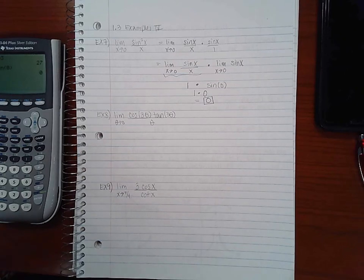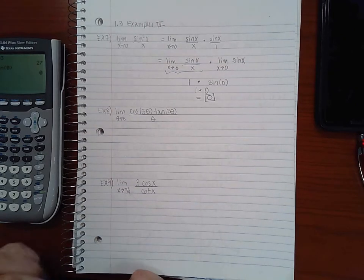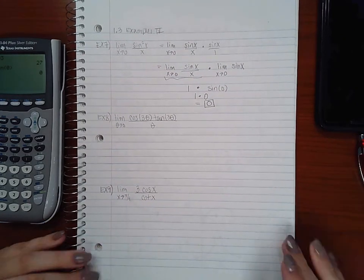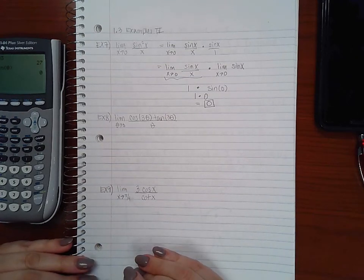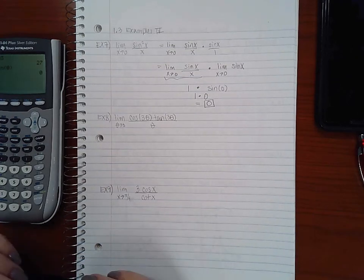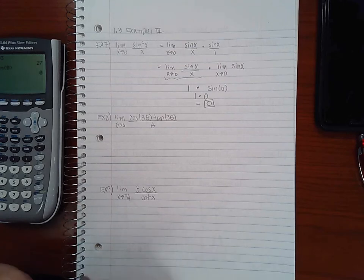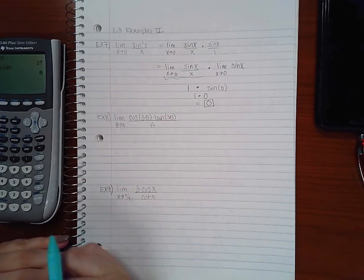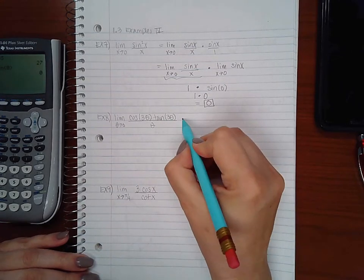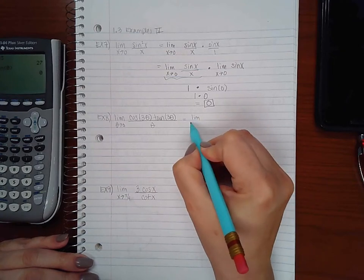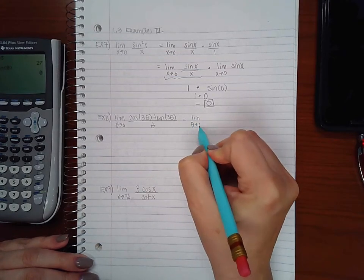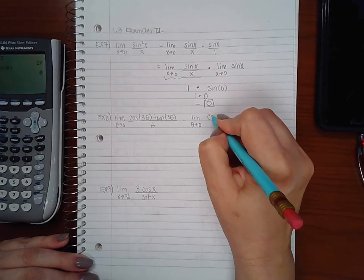I'm going to try the same sort of thing with example 8. If you notice in all of our special theorems we had sine or cosine all by itself, we never had tangent, so I'm going to go ahead and change tangent into its sine and cosine definition.